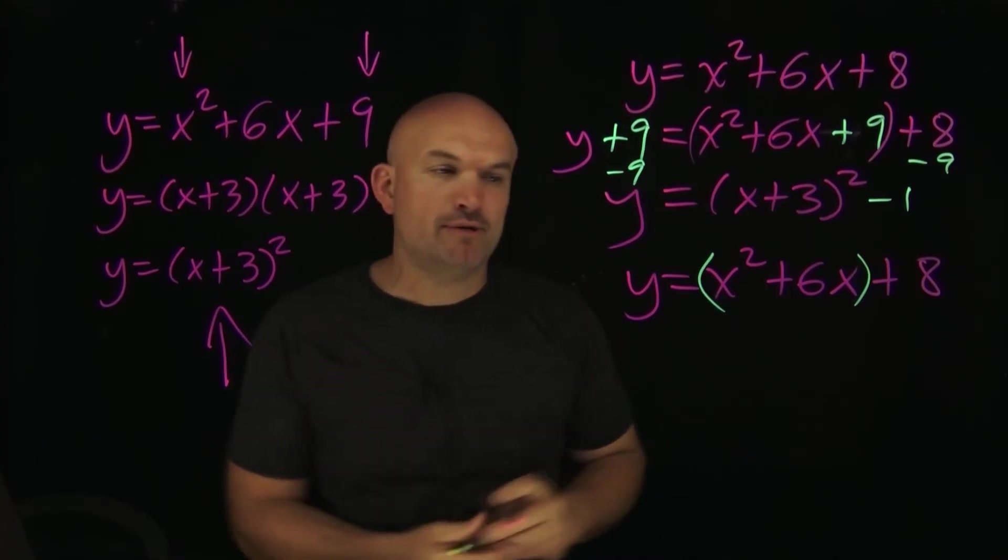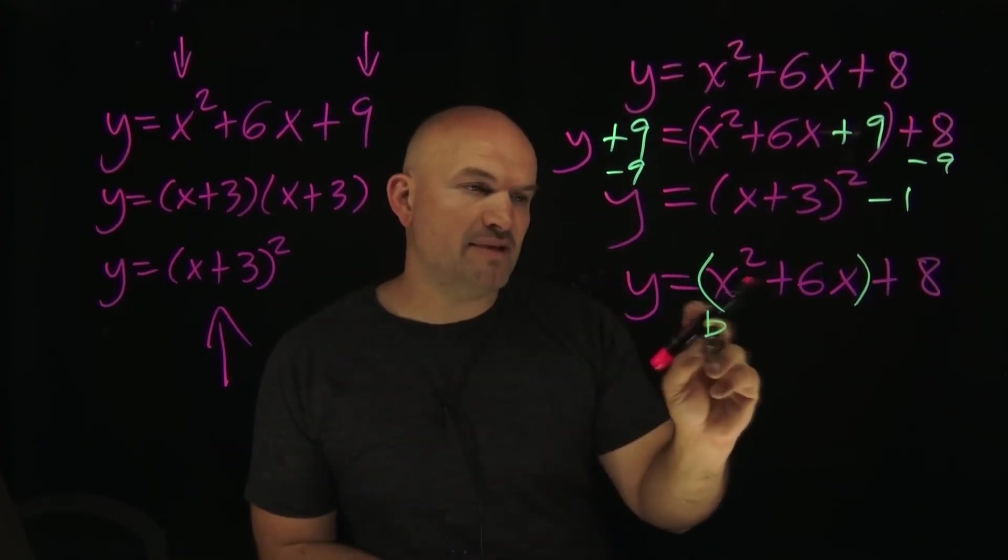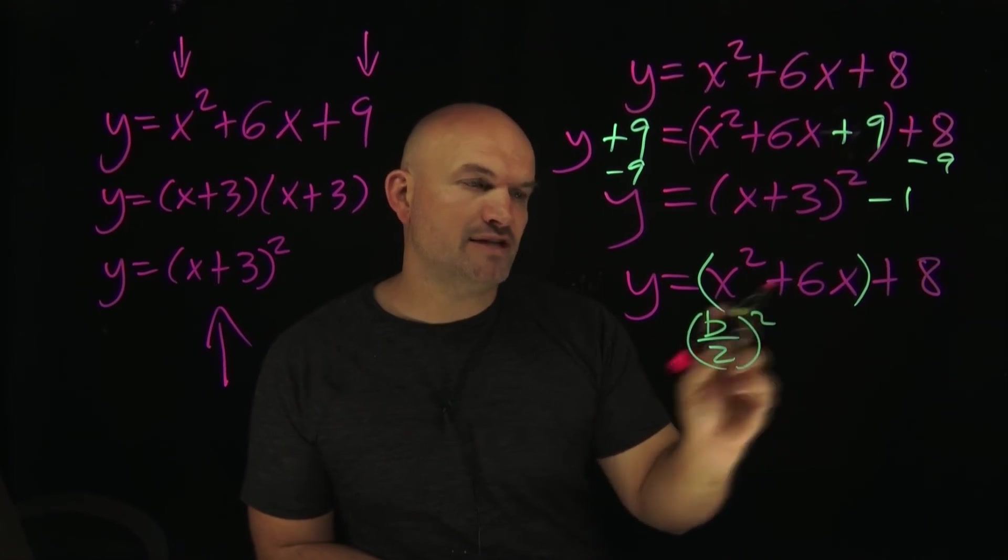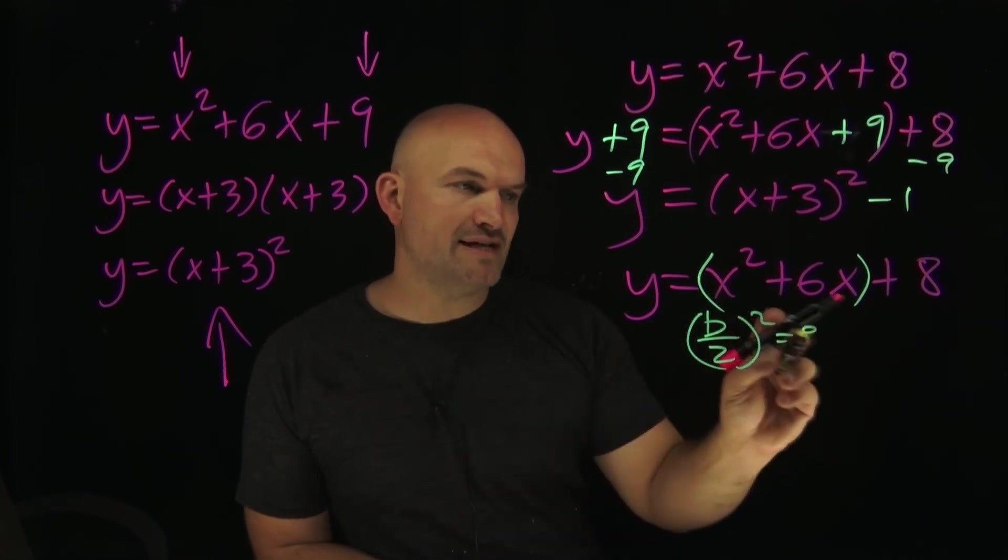So what we can do to always find that value is take our b divided by 2 and square it. So in this case you'd have a 6 divided by 2 squared, which is going to equal a 9.